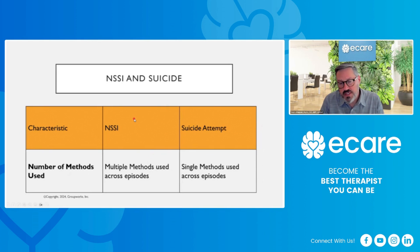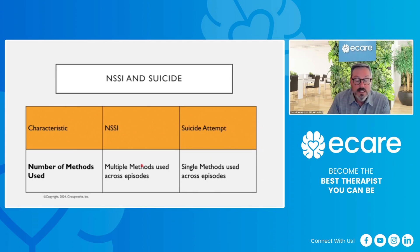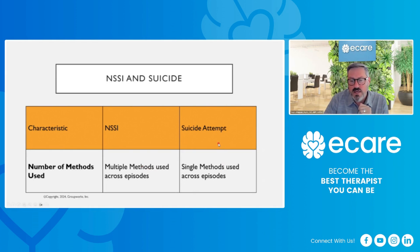The number of methods used is another difference. With non-suicidal self-injury, multiple methods are used across episodes. People will substitute methods — if one method of harming the self is not available, they will move on to another way of causing harm or pain to themselves. With a suicide attempt, single methods tend to be used across episodes. There are exceptions, but that is the general rule.